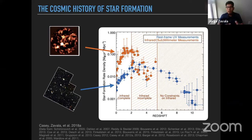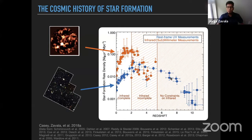In this plot, we have two different kinds of measurements of this quantity. One, illustrated in blue, comes from UV and optical observations, which traces the unobscured component of star formation. We have good constraints up to redshift 8, and some measurements up to redshift 10. On the other hand, we have constraints from far-infrared, submillimeter, and millimeter observations, which trace the dust-obscured component. Here we have good measurements up to redshift ~2, near the peak of the cosmic star formation rate density. Beyond redshift 2 or 3, measurements become incomplete or highly uncertain, and beyond redshift 5, we have basically no constraints on the dust-obscured star formation rate density.